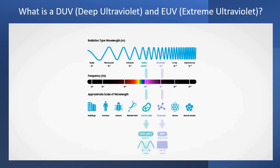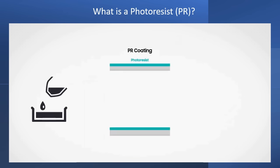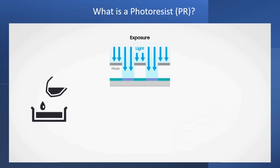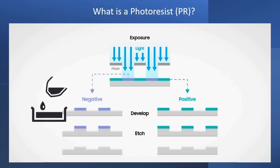There are two kinds of light: deep ultraviolet and extreme ultraviolet. Photoresist is a light sensitive chemical used in photolithography to transfer a pattern onto a substrate by undergoing a chemical change when exposed to light. There are two main types of photoresist: positive and negative. In positive photoresist, the exposed areas are removed, leaving behind the desired pattern. In negative photoresist, the unexposed areas are removed to create the pattern.